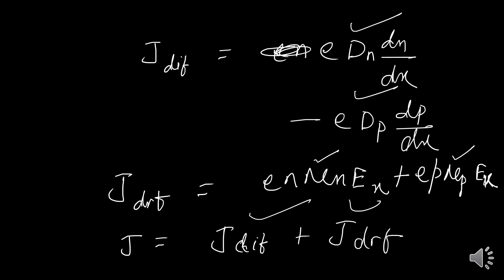Mobility gives an indication of how well a charge carrier moves in a semiconductor as a result of an applied external electric field, while the diffusion coefficient D_n and D_p gives an indication of how well a charge carrier moves as a result of a density gradient — that is, the variation in concentration with respect to distance. Thank you for watching.